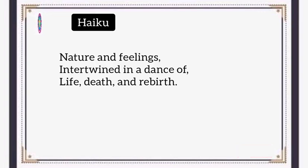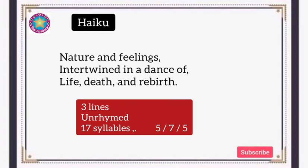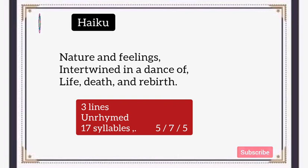Let us see an example of a Haiku poem and discuss its structure. The example poem is: 'Nature and feelings intertwined, in a dance of life, death and rebirth.' You can see there are only three lines in this Haiku poem and all three lines are unrhymed. As mentioned, a Haiku poem discusses natural phenomena and two opposing ideas — here the two opposing ideas are life and death.